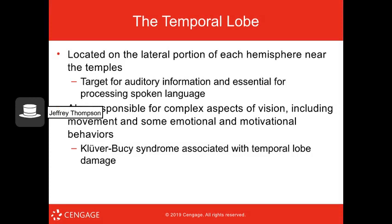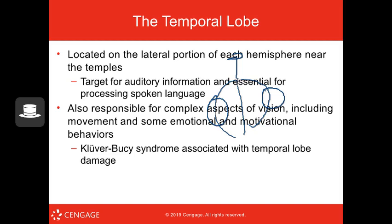The temporal lobes are located on the lateral portions of each hemisphere, near the ears. They are where auditory information is processed and are the key area for processing spoken language. They're also responsible for parts of vision including movement, and some emotional and motivational behaviors.